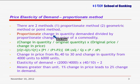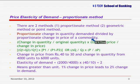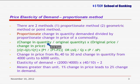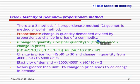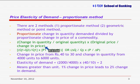So, proportionate change in quantity demanded divided by proportionate change in price of the commodity. We can calculate the elasticity as: change in quantity divided by original quantity, divided by proportionate change in price — that is, original price divided by change in price.